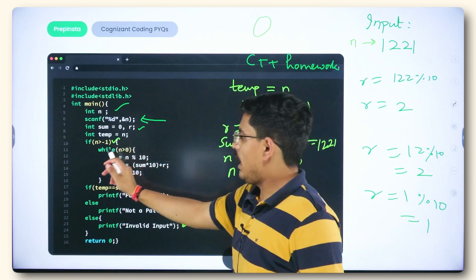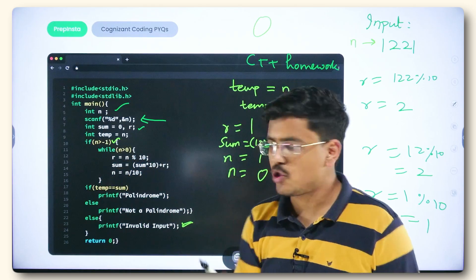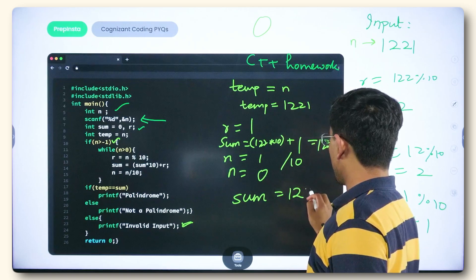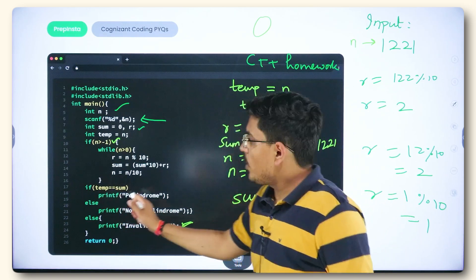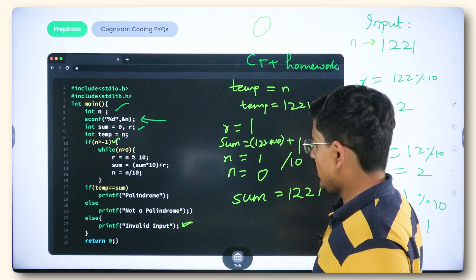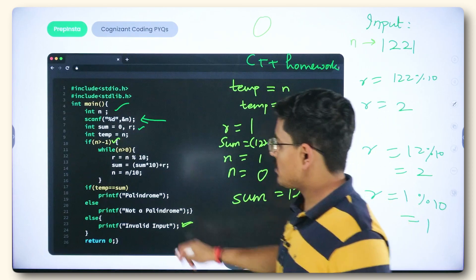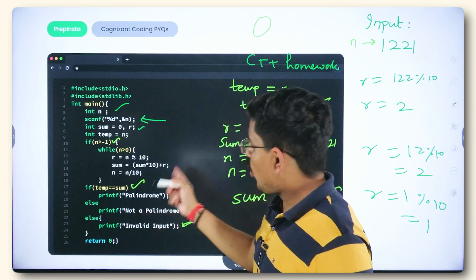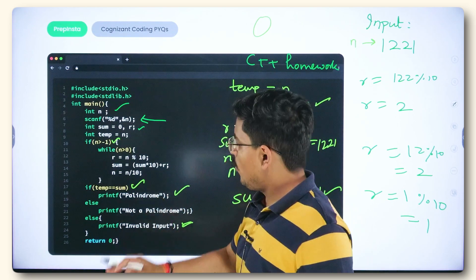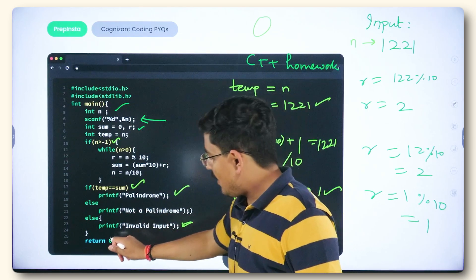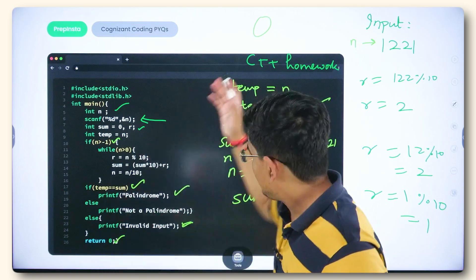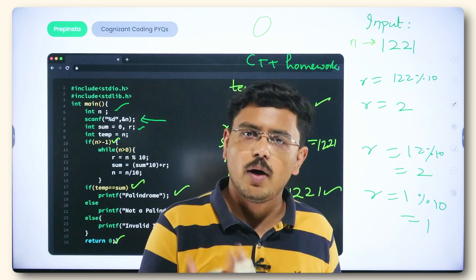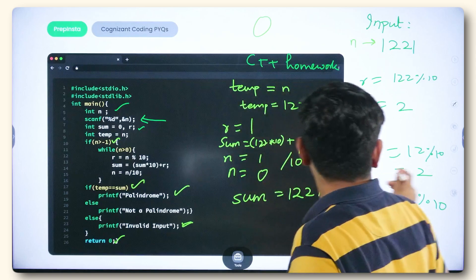The final value of sum is 1221. We now check: if temp equals sum — temp is 1221 and sum is 1221 — the condition is true, so we print 'palindrome'. Had it not been true, we would have printed 'not palindrome'. That is the complete logic of this code.